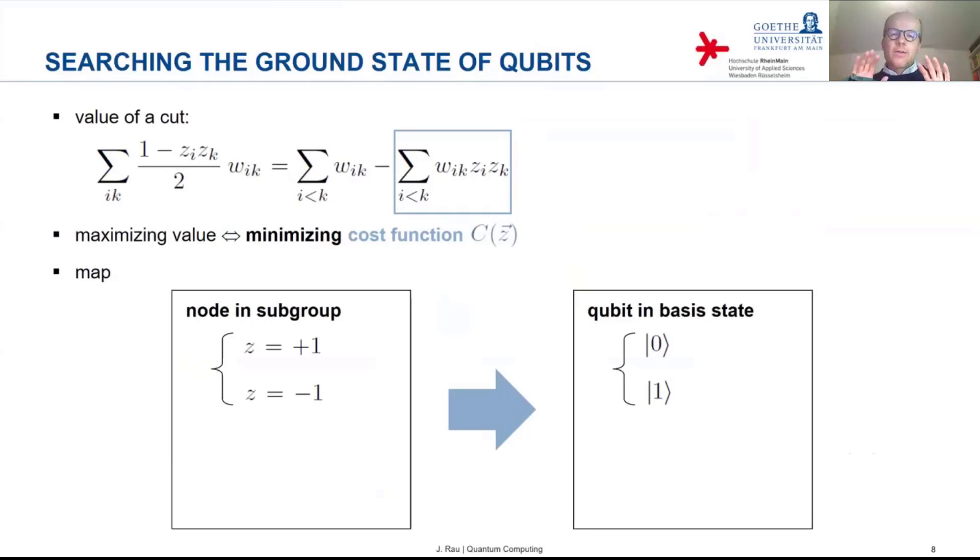And so consider the map where you map each node to a qubit. And if the node belongs to the subgroup where the variable has the value plus one, then you map that to a qubit in the basis state zero. And if the node is in the subgroup where the variable has the value minus one, then you map that to a qubit in basis state one.